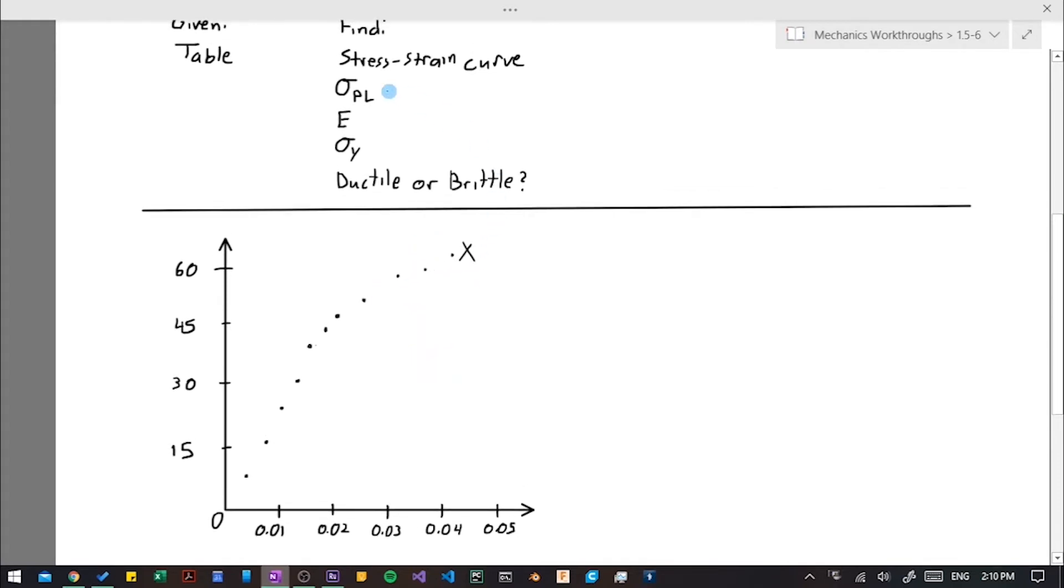First thing we're going to do is find the proportional limit. So where the plot stops becoming linear. And if we think about it as like a straight line and then it starts to curve, and not looking too close at the individual points, just like the general trend, I would say it stops being linear right around here. Again, this is going to be somewhat arbitrary. So let's just pick this point as our proportional limit. And so we're basically saying that it is a straight line from the origin to that point. And then it is going to turn and curve until failure.